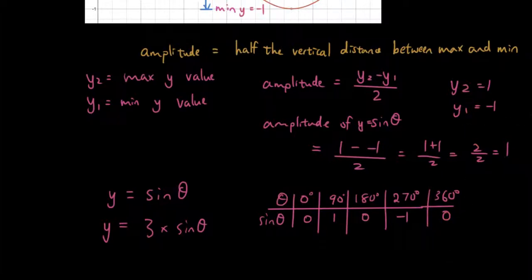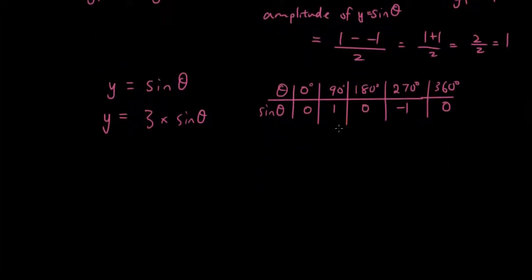If I modify the equation and put 3 times at the front, what happens to our table of values is every number that I've put down for sine theta, I now need to multiply it by 3. So 0 times 3 is 0, 1 times 3 is 3, 0 times 3 is 0, negative 1 times 3 is negative 3, and 0.